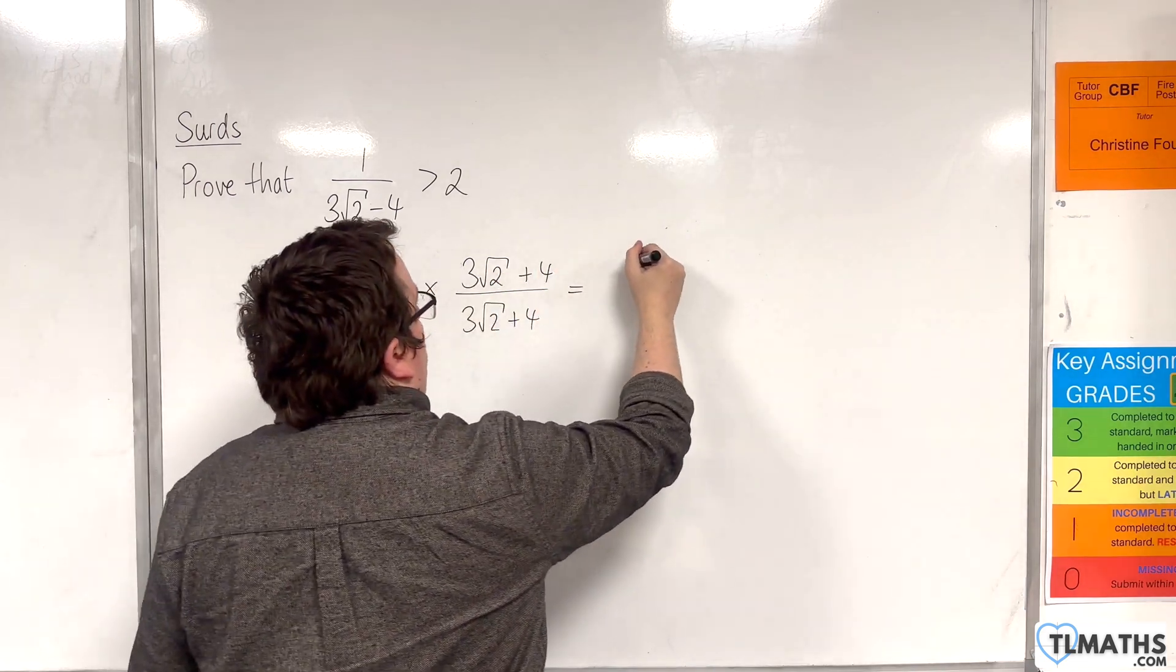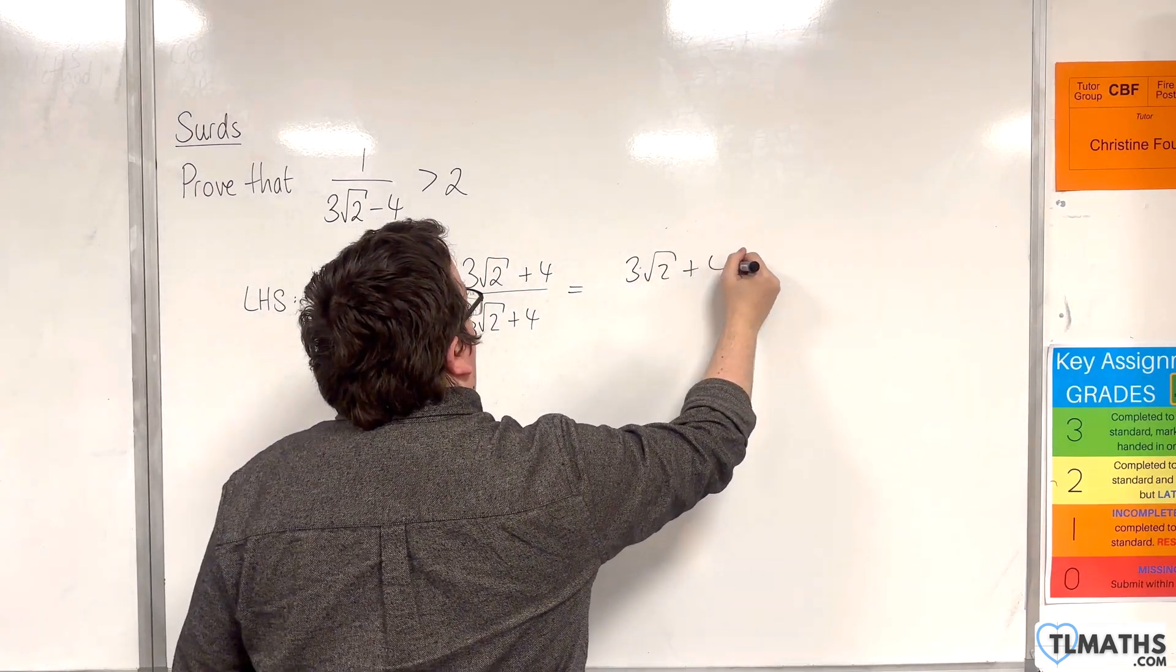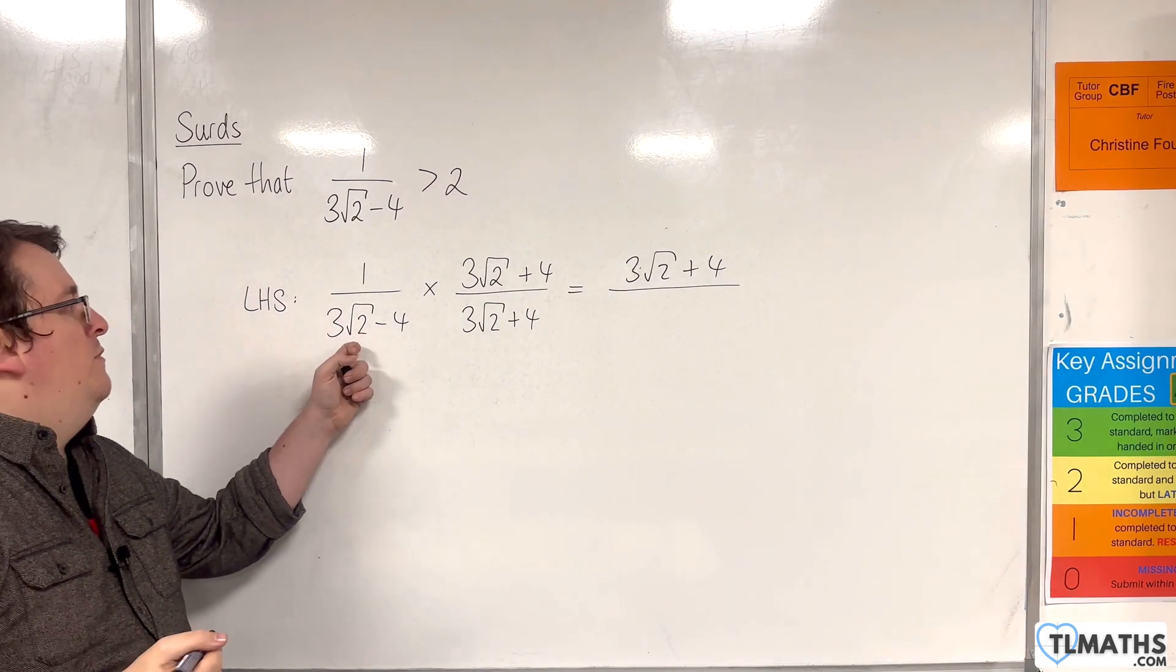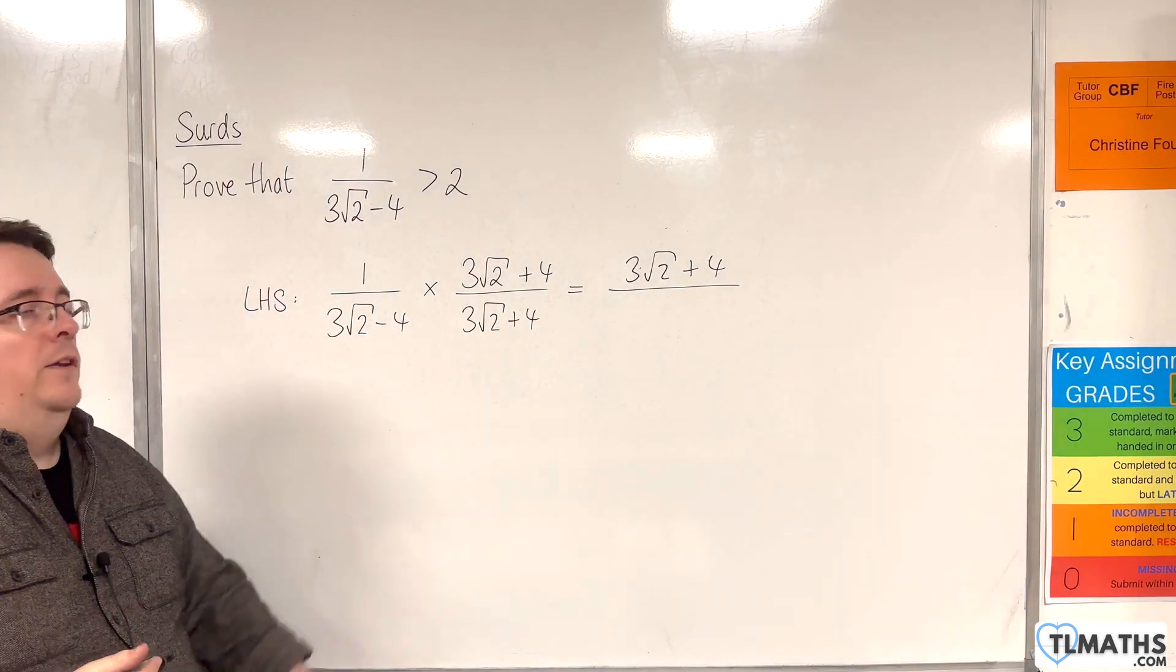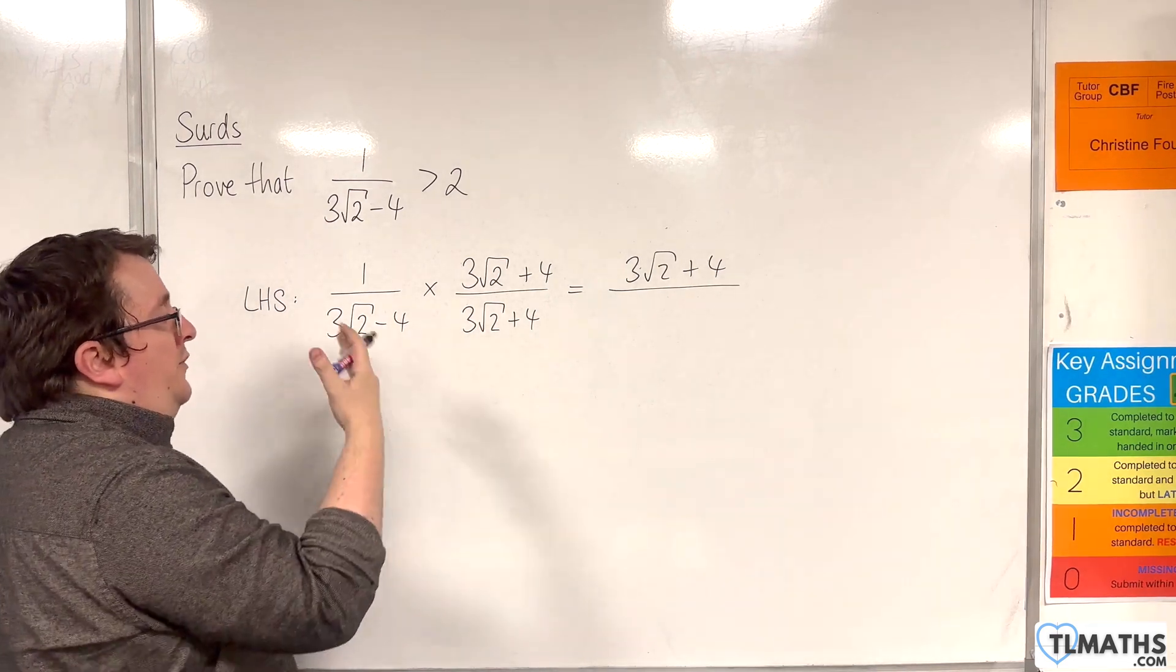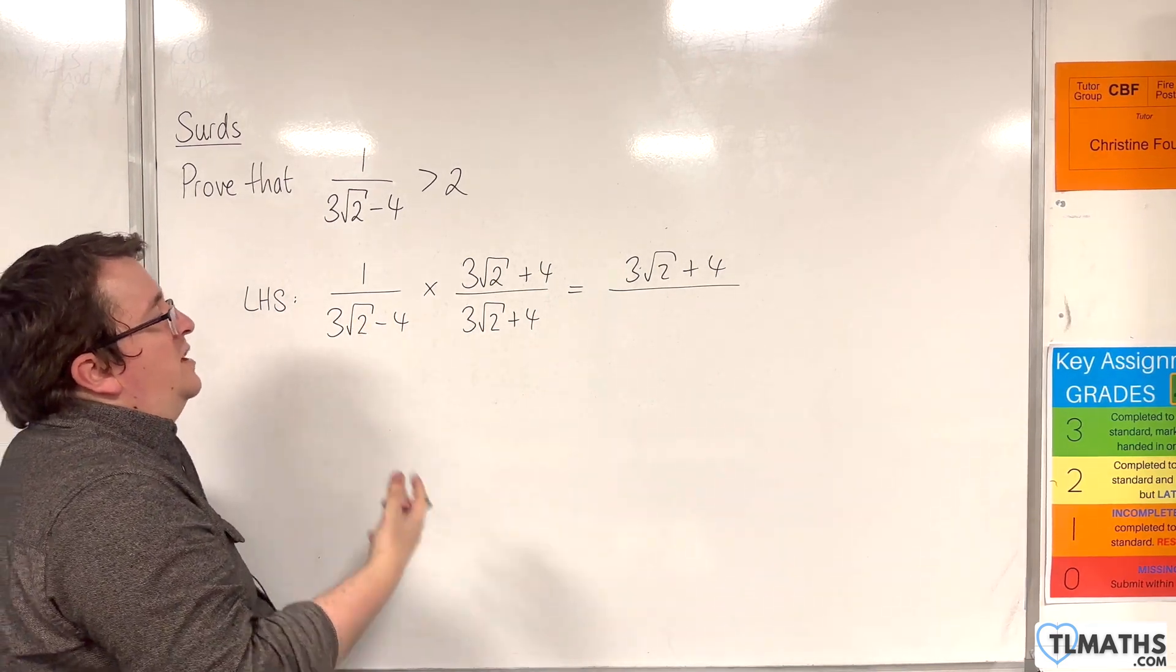Our numerator will just be 3 root 2 plus 4. And we'll divide that by 3 root 2 times 3 root 2. That will be 3 times 3 is 9, root 2 times root 2 is 2, so 9 times 2, which is going to be 18.